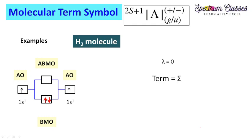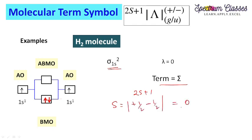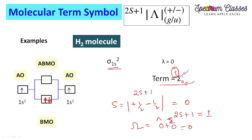Now coming to the example. Taking the S2 molecule, which we used in a previous case — the term has already been decided. Now it's time to define 2S+1. S is the sum of +1/2 and -1/2, and taking the modulus we get 0, so S = 0 and multiplicity 2S+1 = 1. For omega: omega = lambda + sigma. Lambda is 0 in this case and sigma is also 0, so omega = 0. We usually do not denote this 0. So this gives us spin multiplicity, orbital angular momentum, and total angular momentum above the internuclear axis.